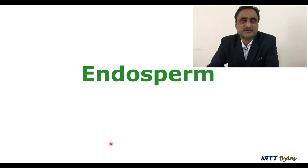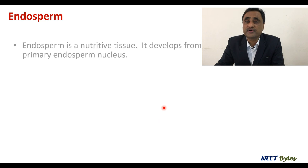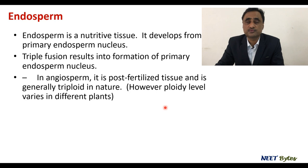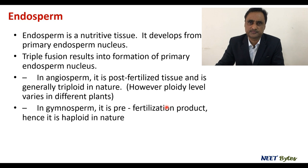Hello friend, this is Dr. Pankaj Kumar, your mentor for today's session. In today's session we will be talking about endosperm, which is a nutritive tissue, and we will also be talking about the different types of endosperm. We know very well that endosperm develops from the primary endosperm nucleus after the phenomenon of triple fusion. The polar nuclei fuse with one of the male gametes to form the primary endosperm cell, which eventually develops into the endosperm. So it is very clear that in angiosperms, endosperm is a post-fertilization structure.